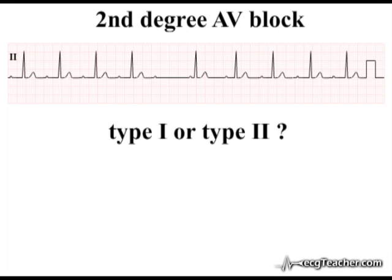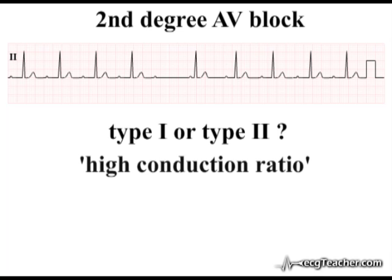Making the call matters because the difference in underlying pathophysiology is reflected in a markedly different prognosis for the patient. In second degree AV block with high conduction ratios, the groups may be so large that full groupings are not demonstrated on a standard rhythm strip. Furthermore, in the case of Mobitz type 1 with high conduction ratios, after the first few beats, the degree of progression in PR interval length within the main body of the group can be so small as to be imperceptible. The key to making the call between type 1 and type 2 is careful analysis of the PR interval around the time of the non-conducted P-wave.